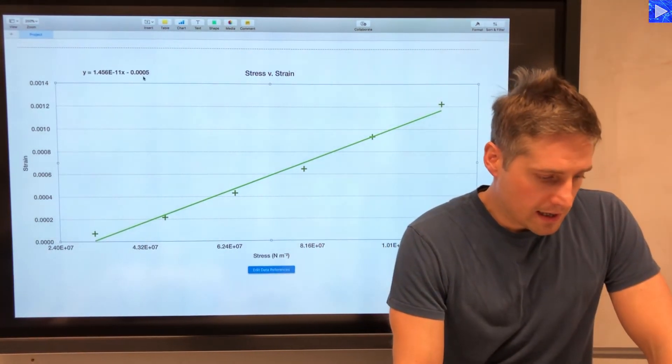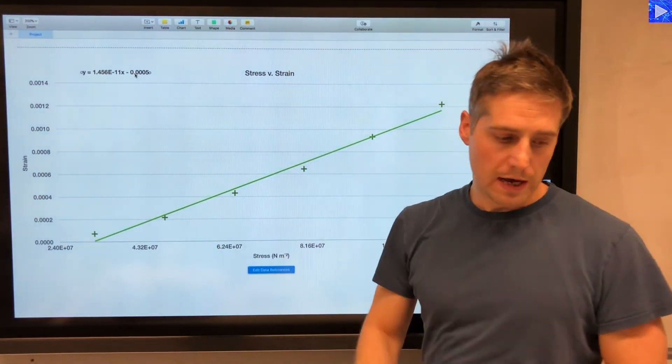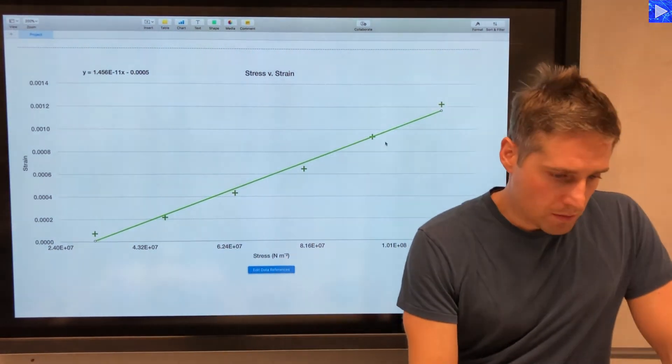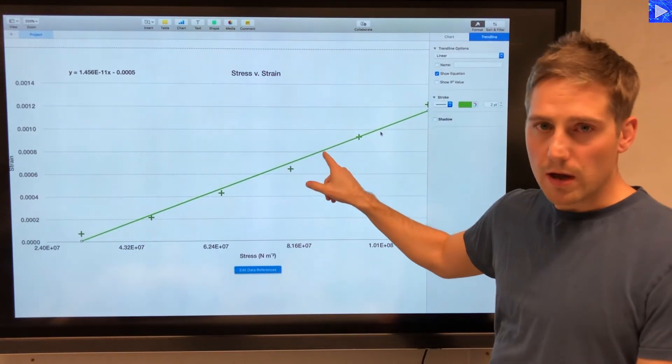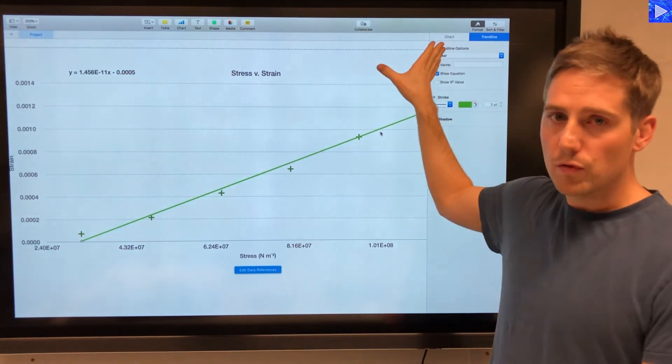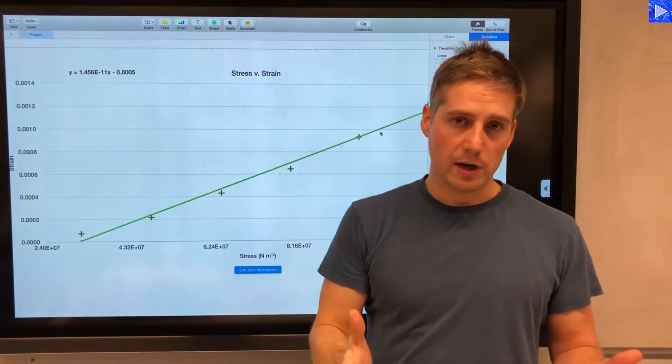This is, up here, the equation of that line. So if I go into the format settings here, I've clicked on the line and I've gone to the format settings, and that shows me some options for the trend line.